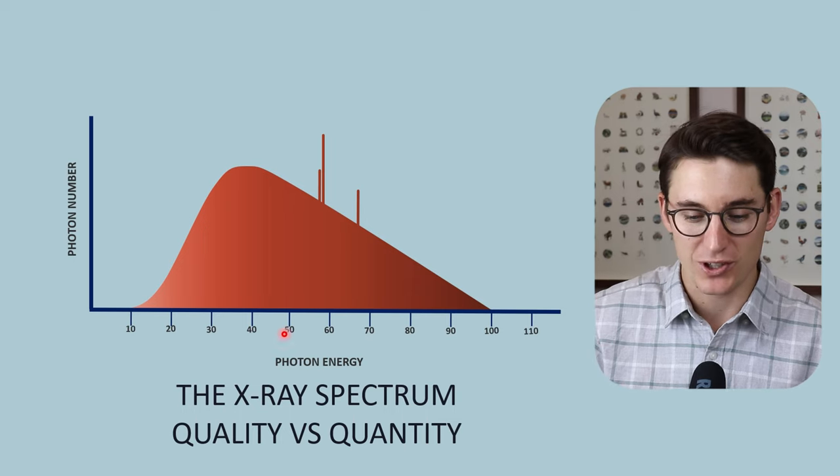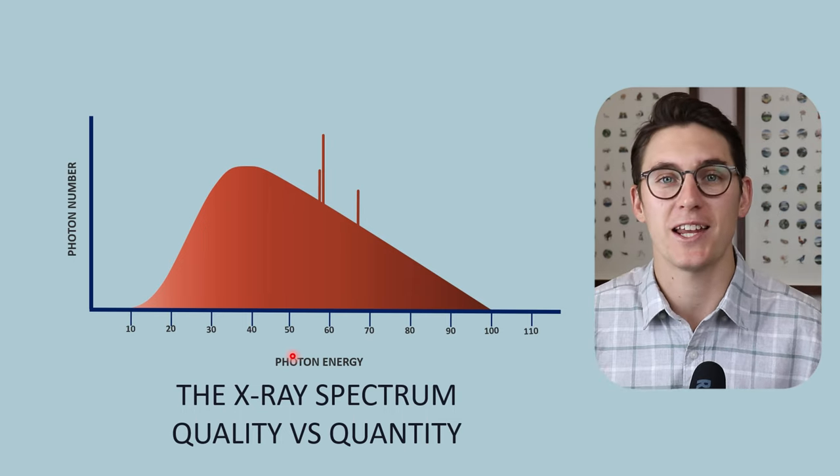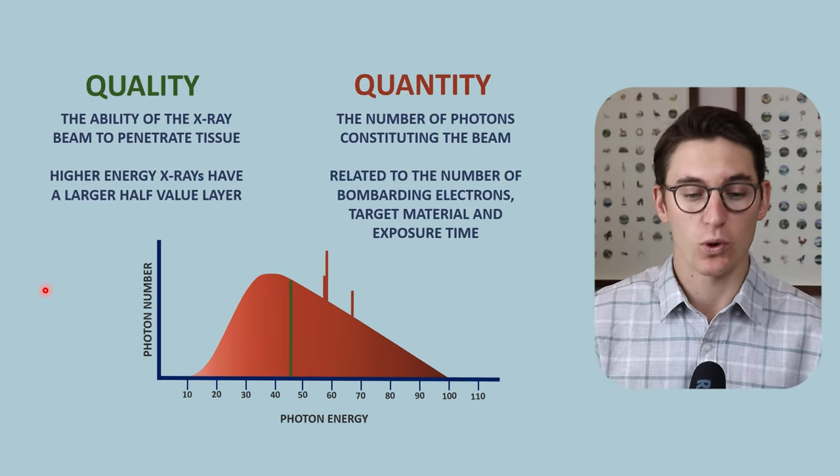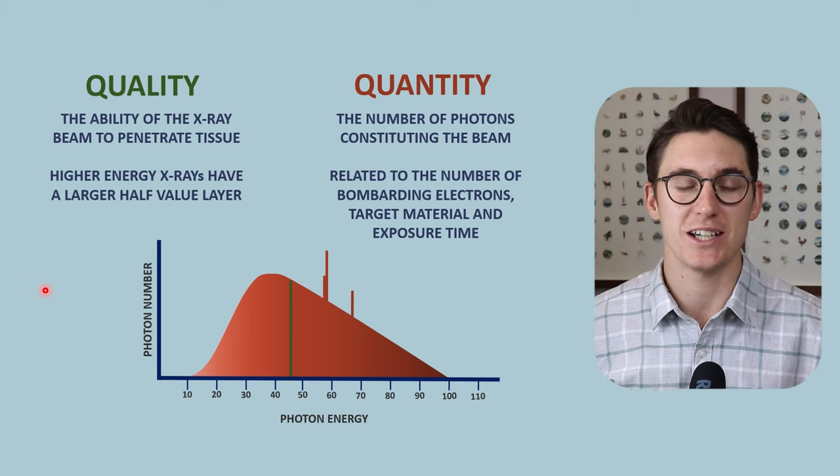Quality refers to the X axis here, the photon energy, and quantity refers to the Y axis, the photon number. So what exactly is quality and quantity of our X-ray beam?